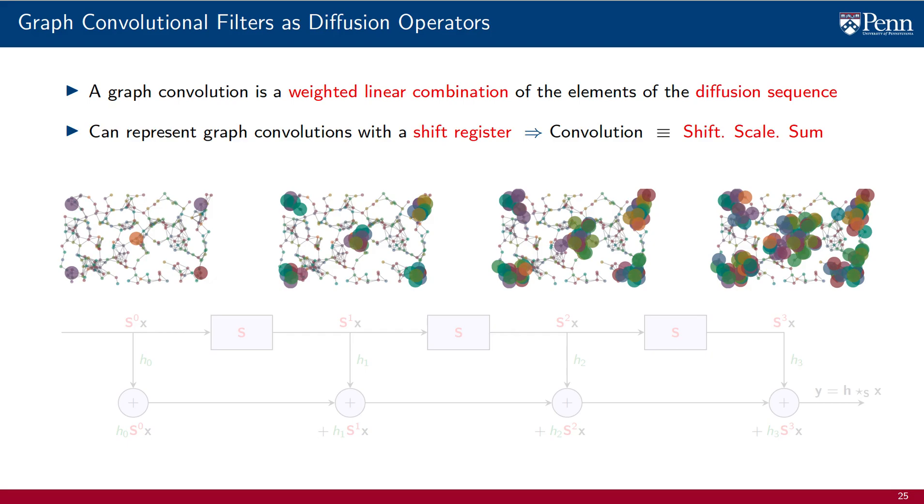Using the recursive definition of the diffusion sequence, we end up with a shift register structure, which is familiar to those of you that have studied implementation of graph filters. Familiar or not, the shift register is just a visualization of the recursive computation of the diffusion sequence. It is based on interpreting convolutions as a combination of scaling, shifting, and summing.